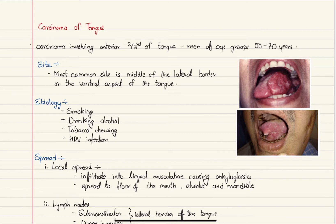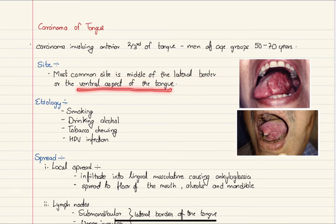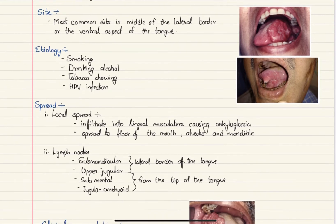The most common site is the middle of the lateral border or the ventral aspect of the tongue. In this picture you can see this tumor arising on the left side on the lateral border of the tongue, whereas this tumor is arising on the ventral aspect of the tongue.